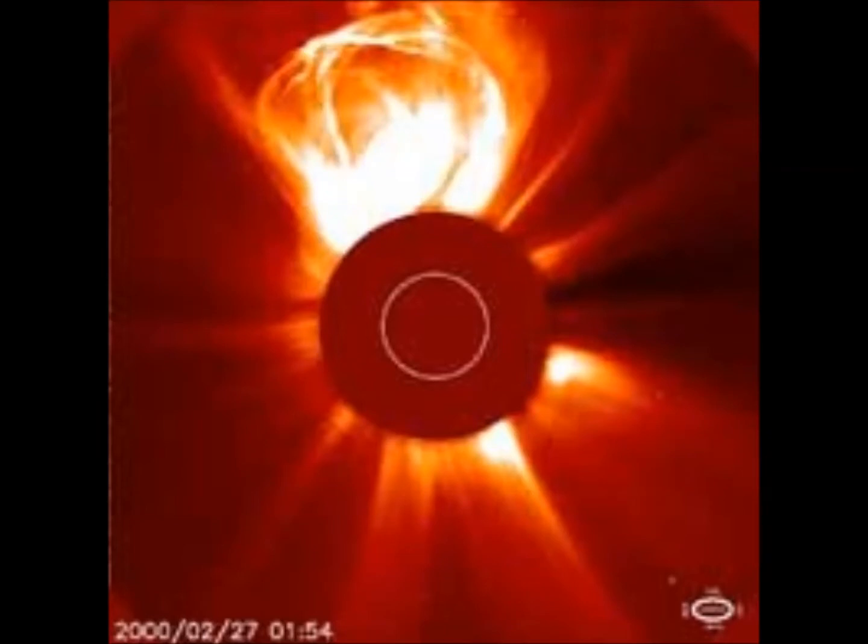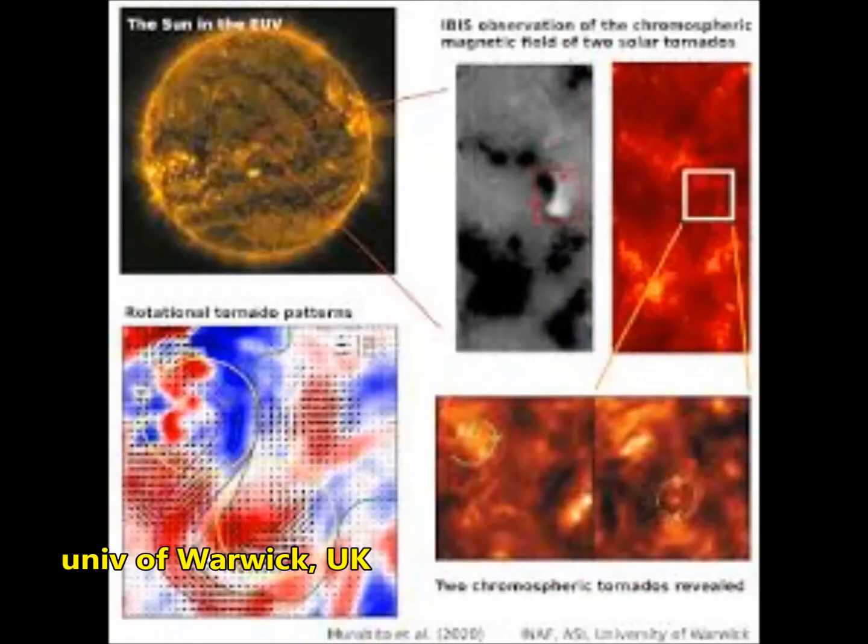The main building block of solar tornadoes are tangled magnetic fields on the Sun, but it's notoriously difficult to measure the magnetic field in the Sun's chromosphere.